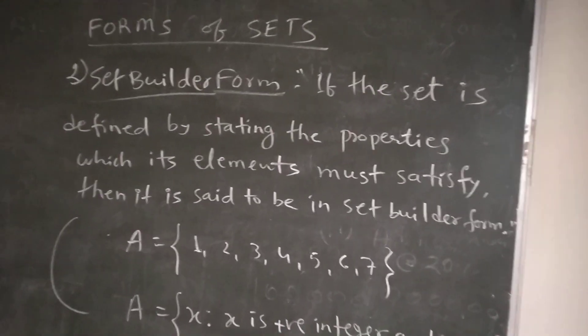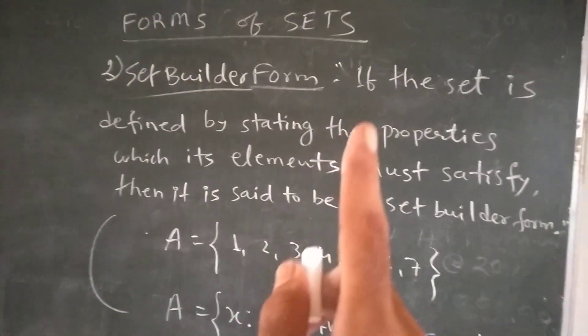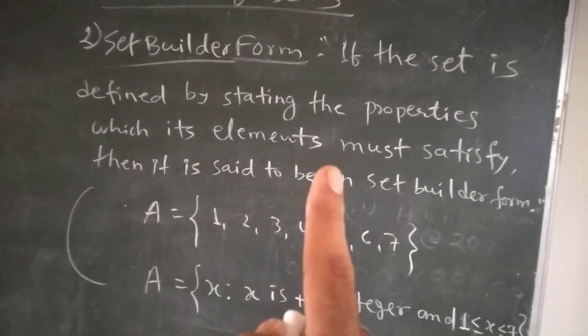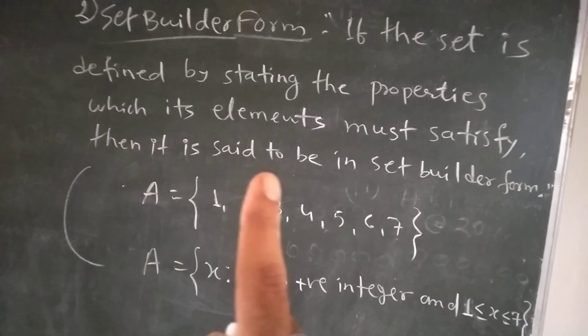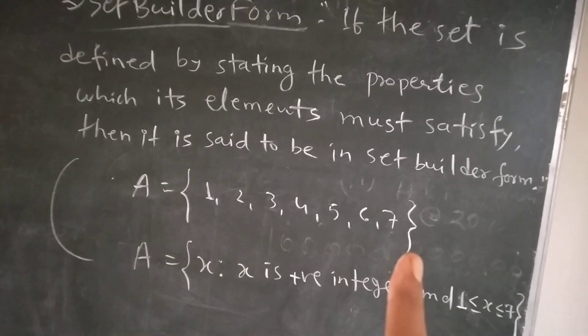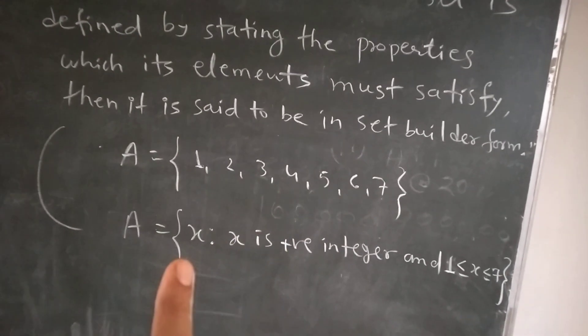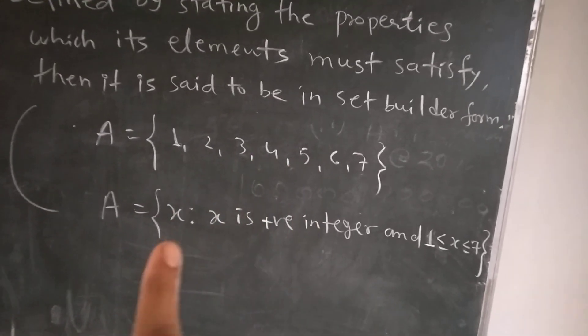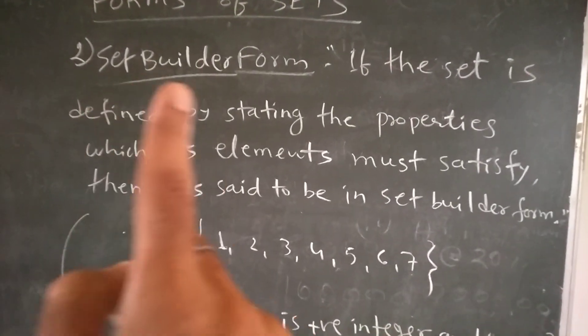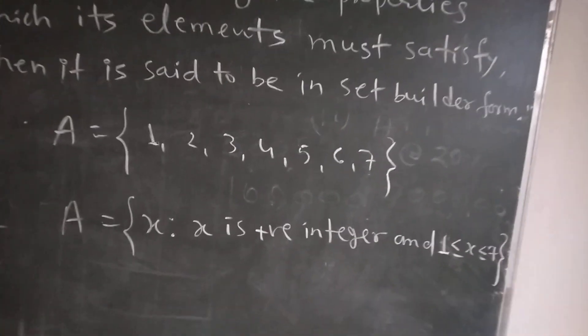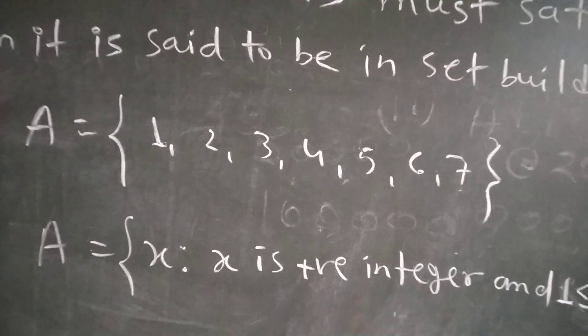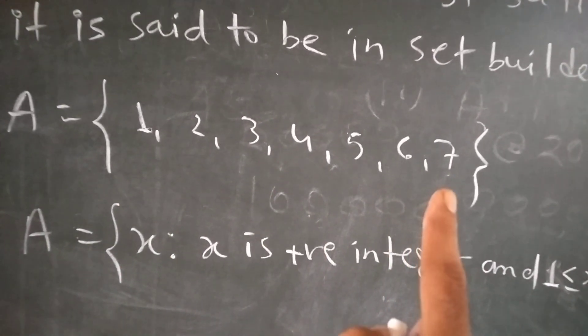The second form is the set builder form. If we define the elements by stating the properties which its elements must satisfy, then it is said to be in set builder form. Let's look at this example. This one is tabular form in which all elements are written in the set.